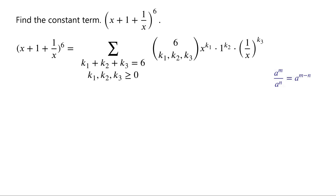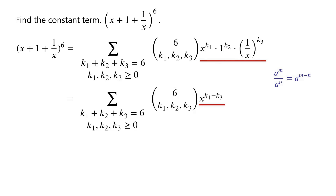We know that a to the power of m over a to the power of n is equal to a to the power of m minus n. By applying this, x to the power of k1 times 1 over x all to the power of k3 equals x to the power of k1 over x to the power of k3, which equals x to the power of k1 minus k3. So x to the power of k1 times 1 to the power of k2 times 1 over x all to the power of k3 equals x to the power of k1 minus k3.